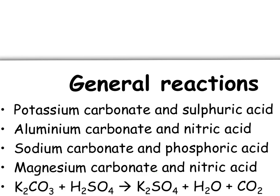You then, after you've constructed the table and completed it, need to try these four general equations. Potassium carbonate and sulfuric acid. Potassium sulfate will be the salt. Aluminium carbonate and nitric acid. Aluminium nitrate will be the salt, etc. And you land up with potassium carbonate, sulfuric acid, potassium sulfate, water, and carbon dioxide.